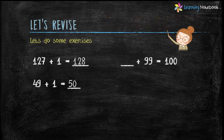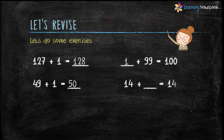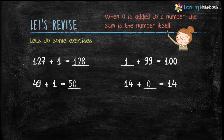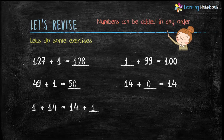Blank plus 99 equals 100 — the answer is 1, because 100 is the successor of 99. Next, 14 plus blank equals 14 — the answer is 0, because when 0 is added to a number the sum is the number itself. Next, 1 plus 14 equals 14 plus blank — the answer is 1, as numbers can be added in any order.